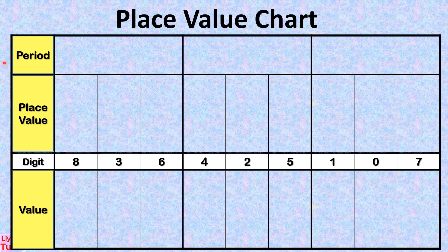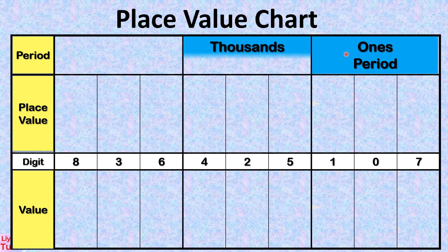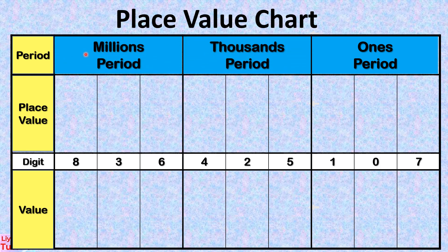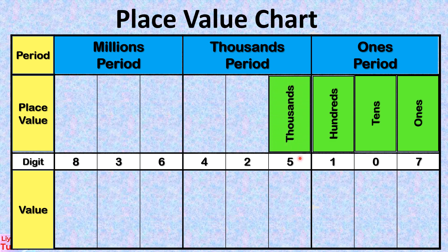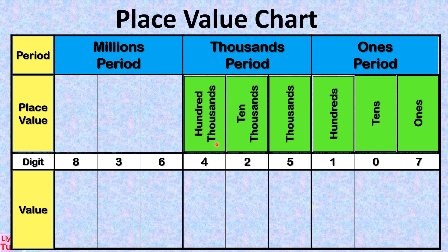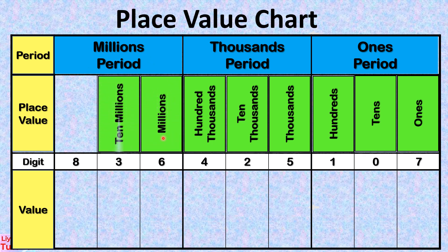Under period, we have ones period, thousands period, and millions period. Under place value, the ones period has ones, tens, and hundreds. Under the thousands period, we have thousands, tens, and hundreds. Under the millions period, we have millions, tens, and hundreds.